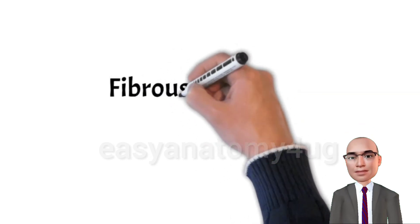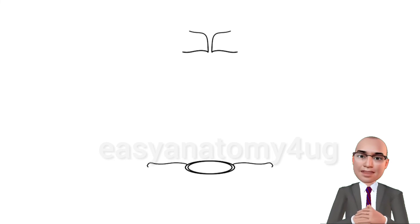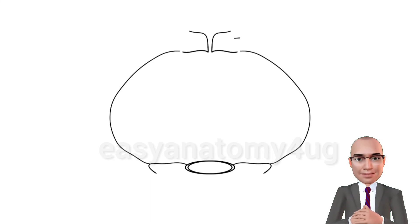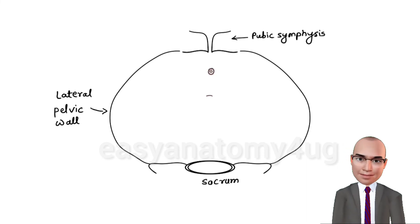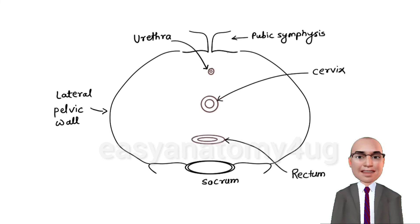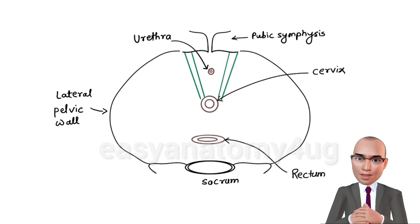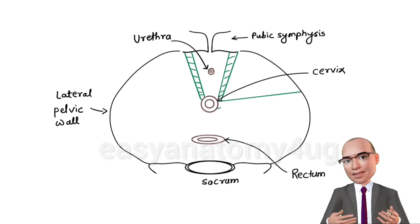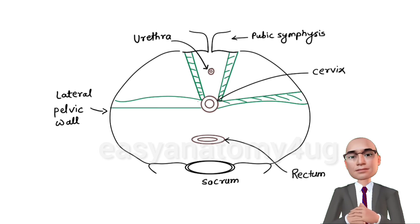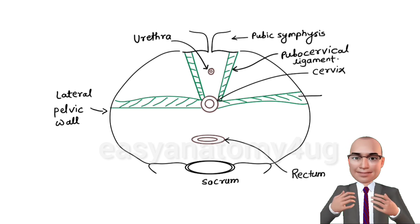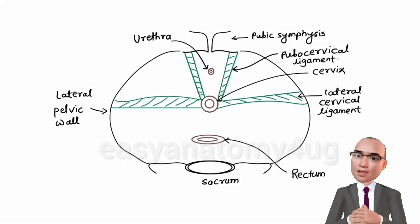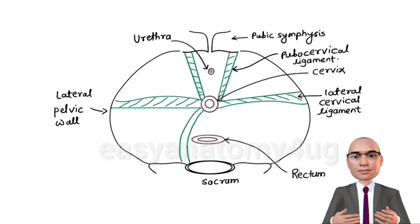Let's draw the fibrous support of the uterus. Start with the pubic symphysis anteriorly, sacrum posteriorly, and the lateral pelvic wall on each side. Show three openings in the midline from anterior to posterior: the urethral opening, the cervical opening, and the opening of the rectum. Draw the pubocervical ligaments from the pubis to the cervical opening. Draw the transverse cervical or lateral cervical ligaments from the lateral wall of the pelvis to the cervix. Draw the utero-sacral ligament posteriorly from the sacrum to the cervix.